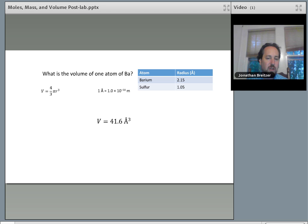Then I'll do the same thing for the other atom that's asked: barium. You notice that the radius of barium is about twice as much as sulfur, but the volume is much, much greater, and that's because the radius is cubed.